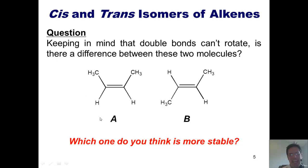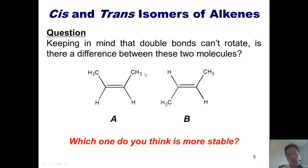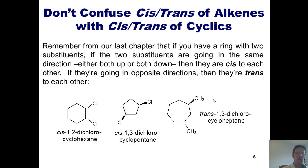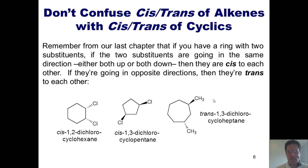Compound A is called a cis molecule and compound B is called a trans molecule. In other words, alkenes that have two groups on them that are closer to each other on the same side of the double bond are called cis alkenes, and ones that are the opposite are called trans alkenes. Remember from our last chapter that we also use the terms cis and trans to refer to the directionality of substituents on ringed compounds.